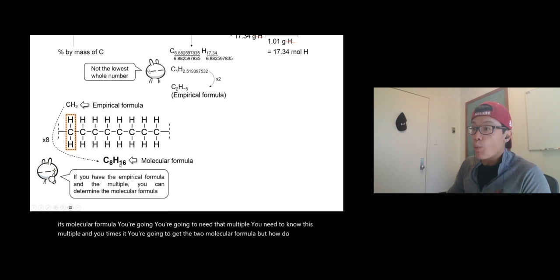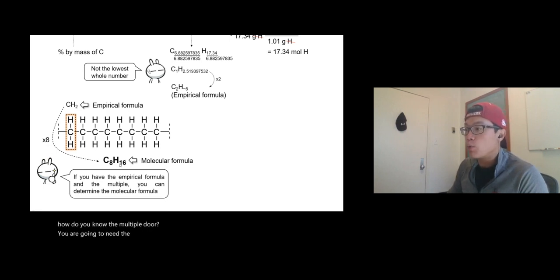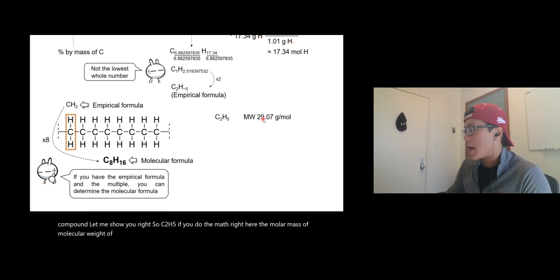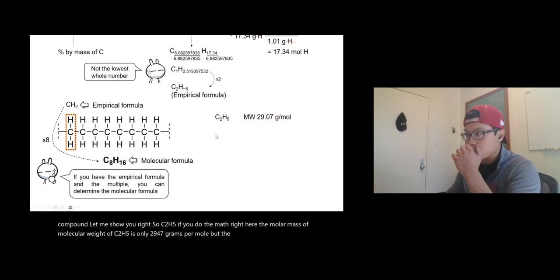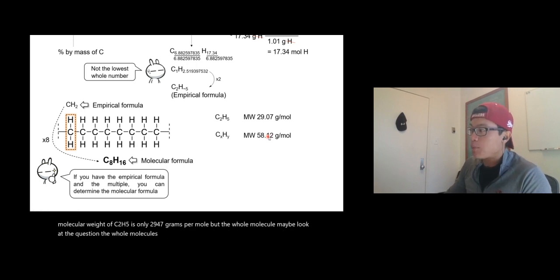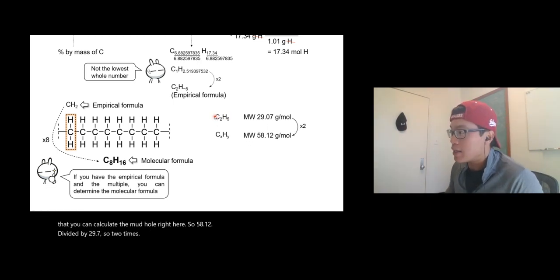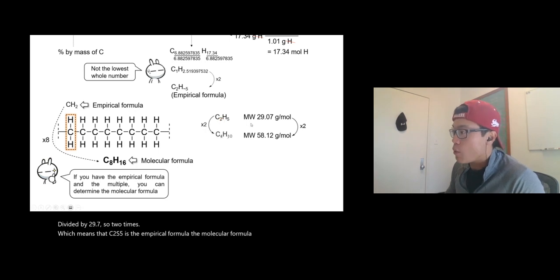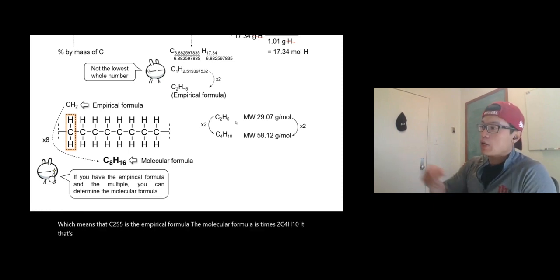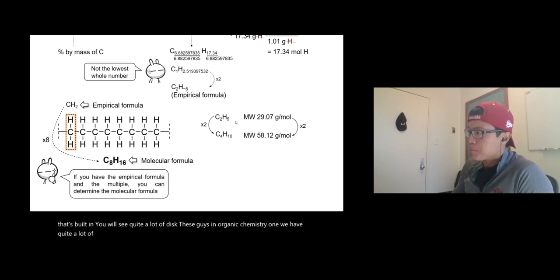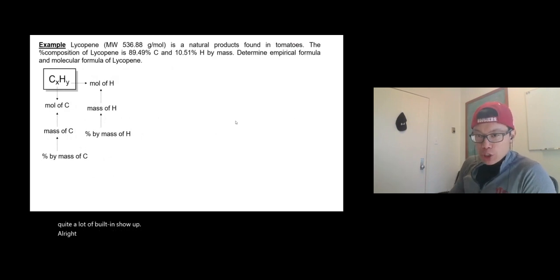To convert the empirical formula to the molecular formula, you need the molar mass of the whole compound. The empirical formula C2H5 has a molar mass of 29.07 grams per mole, but butane's molar mass is 58.12 grams per mole. Divide 58.12 by 29.07 to get a multiple of 2, so the molecular formula is C4H10 — that's butane, which you'll see a lot in organic chemistry.